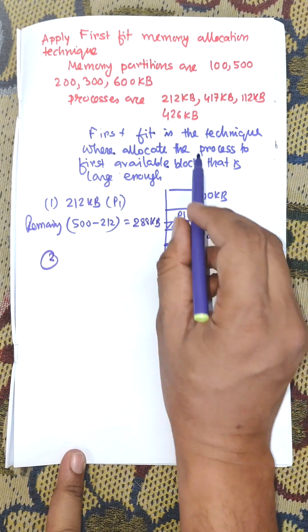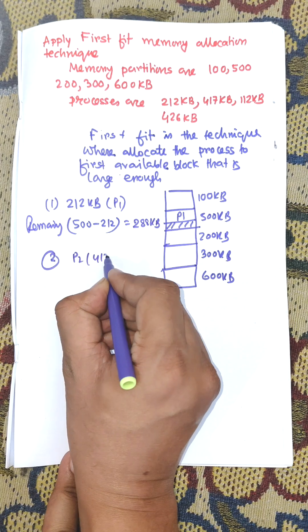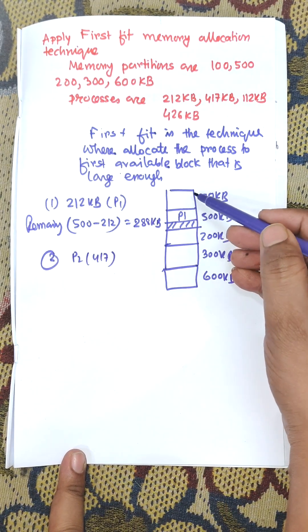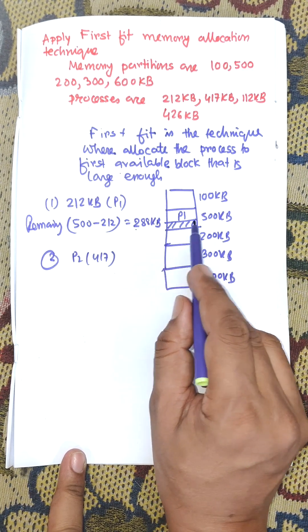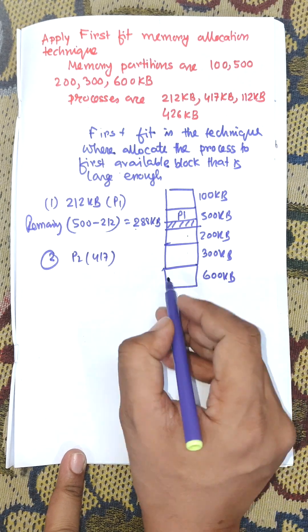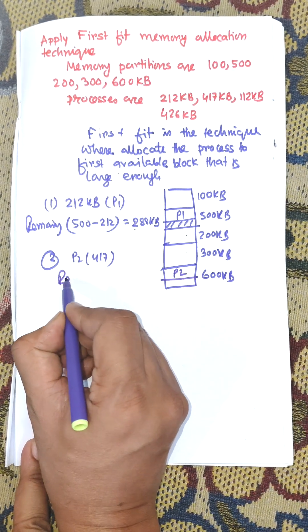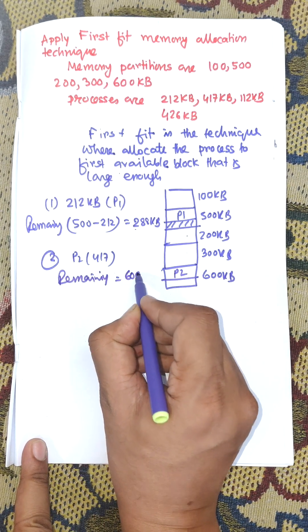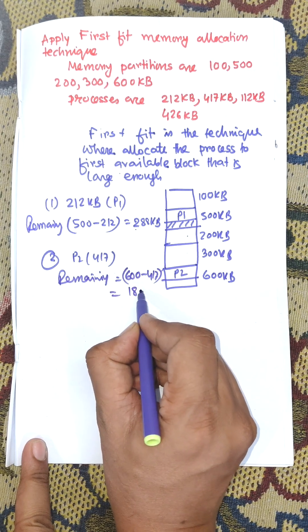Next, process P2 is 417 KB. Starting from the beginning, it cannot be allocated within 200 KB, nor within 288 KB, nor within 300 KB. It will allocate within the 600 KB block. Remaining memory is 600 minus 417, equal to 183 KB.